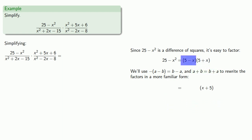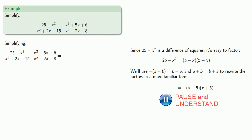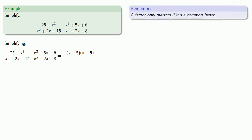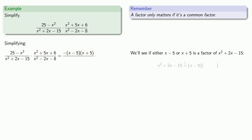For the other factor, 5 minus x is the same as minus times x minus 5. Remembering that a factor only matters if it's a common factor, we check whether x minus 5 or x plus 5 is a factor of our denominators. We test x squared plus 2x minus 15: is it equal to x minus 5 times something? We try x minus 5 times x plus 3, and it turns out it isn't.